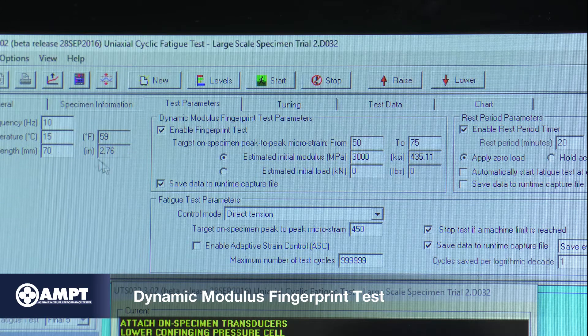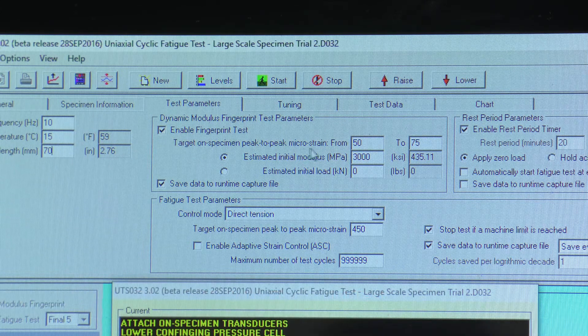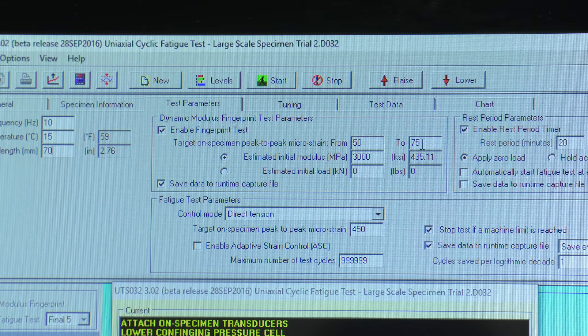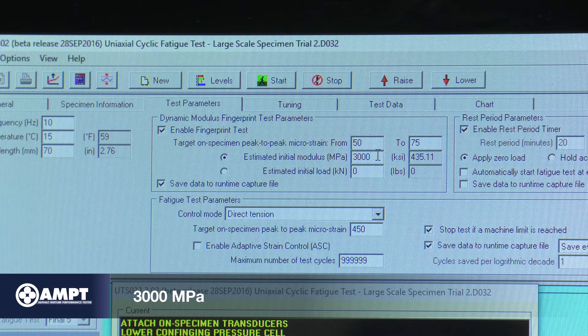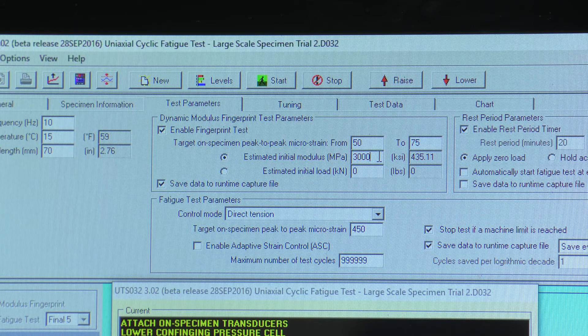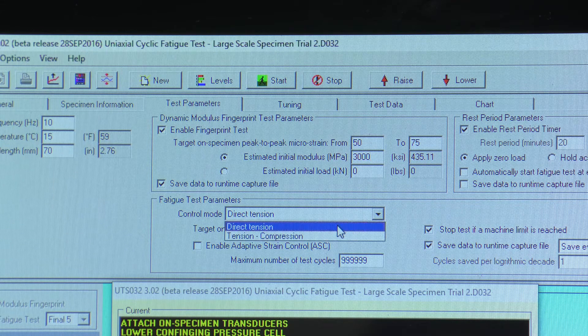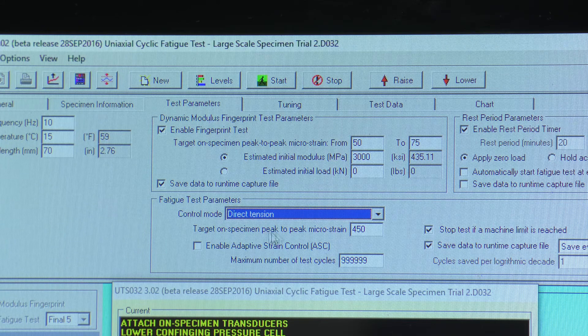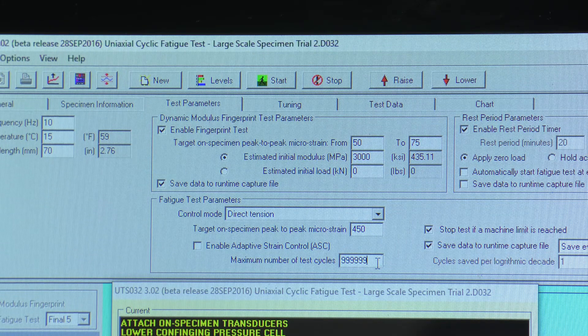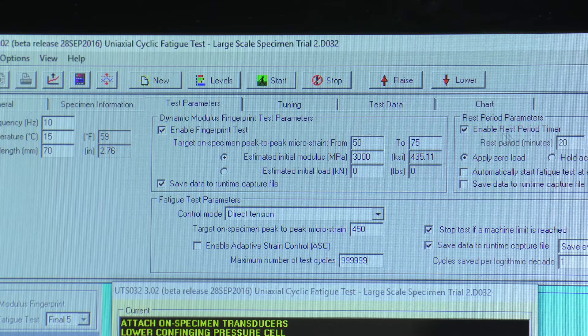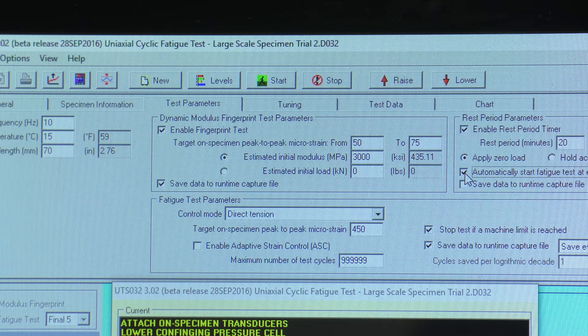Enable the dynamic modulus fingerprint test. Set the target strain range between 50 and 75 microstrain. The estimated initial modulus should be underestimated. Modulus can be estimated from the dynamic modulus test. Select Direct Tension Test where the target peak-to-peak microstrain is fixed at 450, but it can be changed according to the dynamic modulus fingerprint. Enter the maximum value for number of test cycles. Enable Rest Period and apply zero load. Select Automatic Start after the 20-minute rest period.